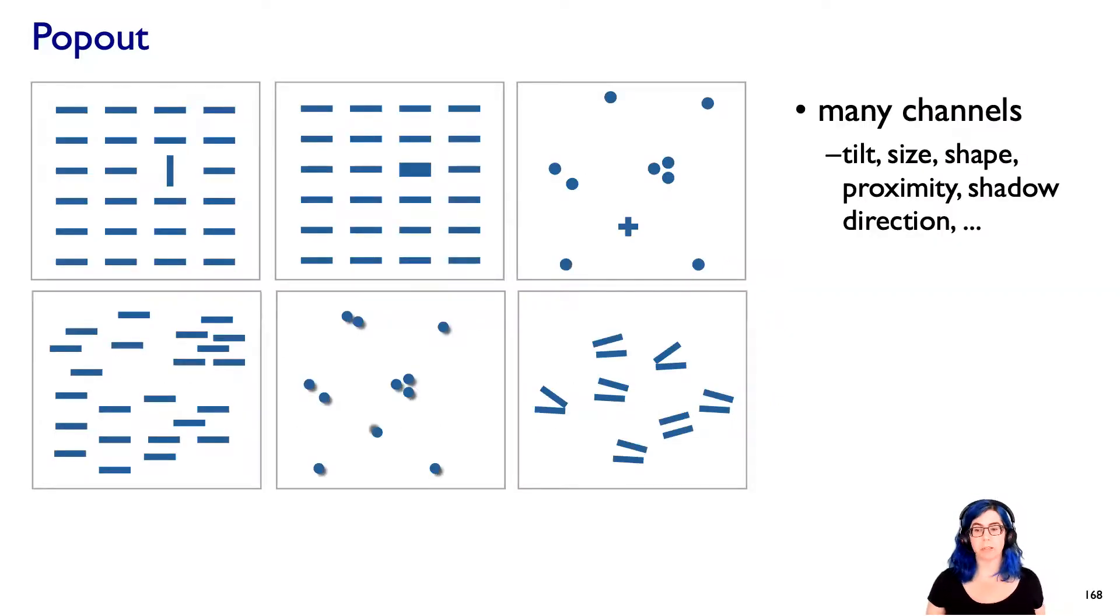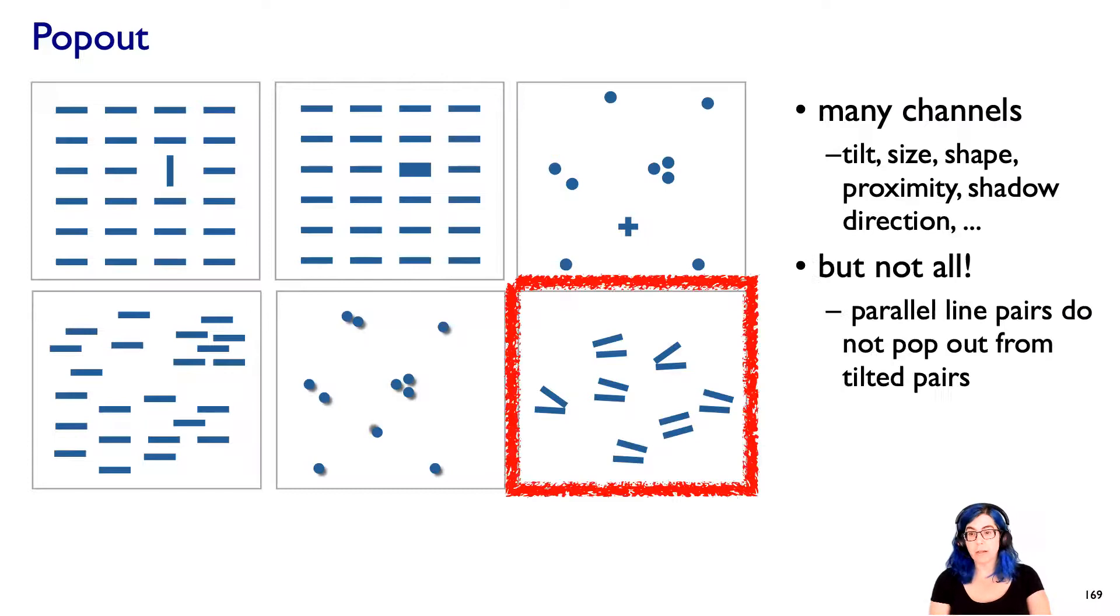Now, I'll point out that popout is not just about shapes and colors, it's a huge number of channels actually do allow popout. So things like tilt and size and shape, proximity, even subtle things like shadow. So a lot of things, as a single channel, our visual system will give us popout. I know that it's not absolutely everything. For example, parallelism is not something we can get popout from, we actually would have to do serial search to figure out when we've got the tilt versus the parallel one. So it's not everything, although it's lots of things.